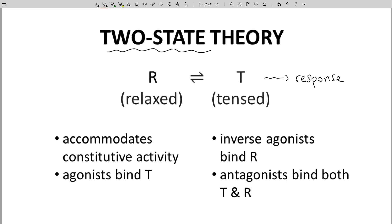What are the benefits of the two-state theory? Well, two-state theory immediately accommodates constitutive activity. In a normal state, the receptor, in the absence of a ligand, may have some fraction in the tensed state. That looks completely reasonable. That fraction in the tensed state will cause a response.